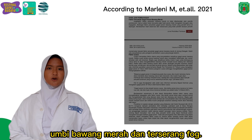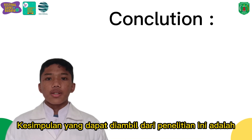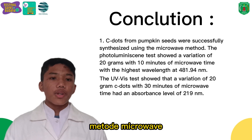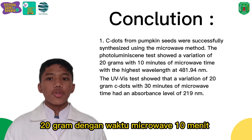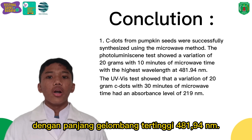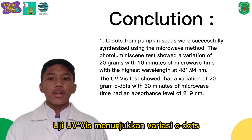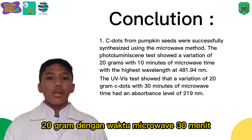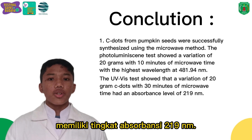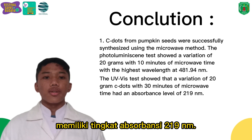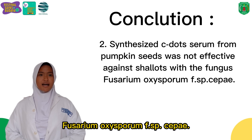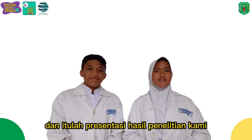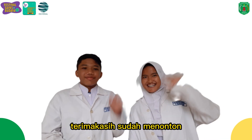The conclusion we can draw from this research is that C-dots from pumpkin seeds were successfully synthesized using the microwave method. The photoluminescence test showed the 20g variation with 10 minutes of microwave time had the highest wavelength at 488.95 nm. The UV test showed that the 20g variation with 30 minutes of microwave time had an absorbance level at 219 nm. However, synthesized serum from pumpkin seeds C-dots was not effective against shallots infected with the fungus Fusarium Oxysporum FSPC. And that concludes the video presentation of our research study. Thanks for watching. Bye!